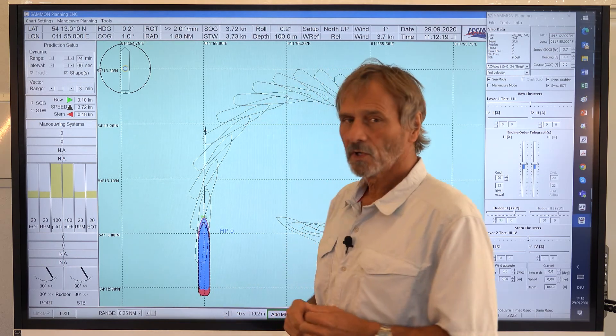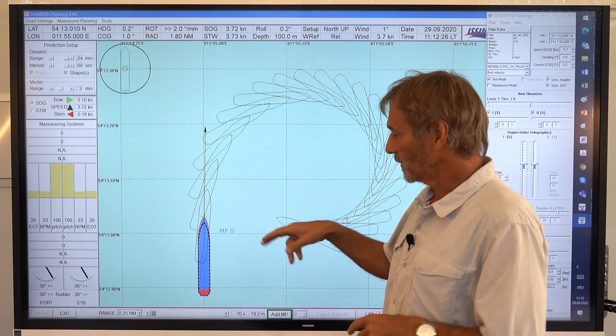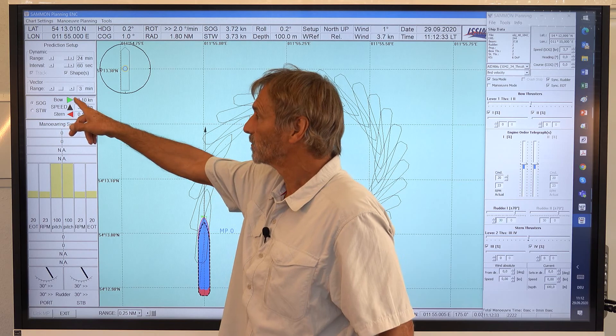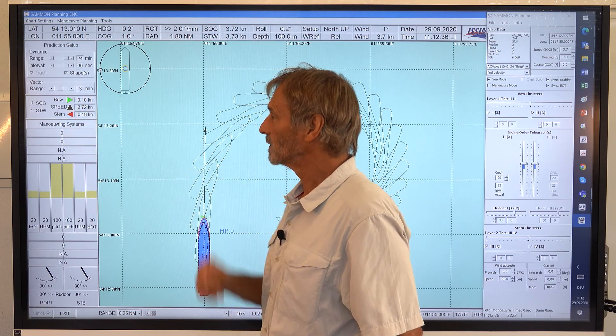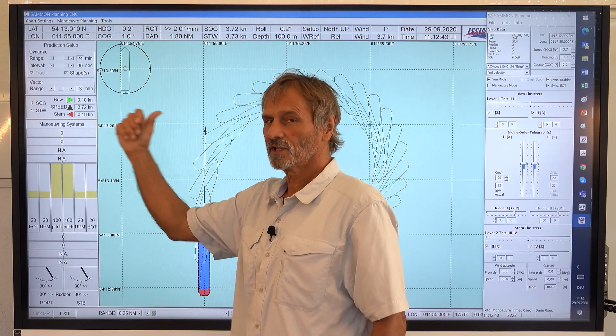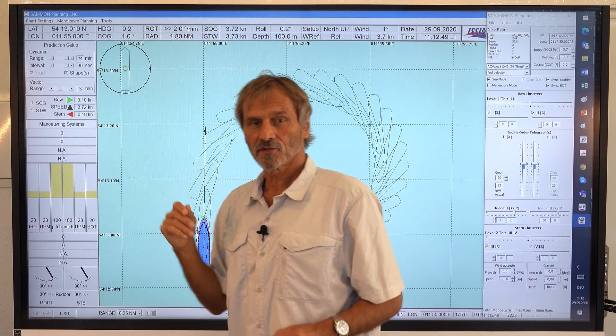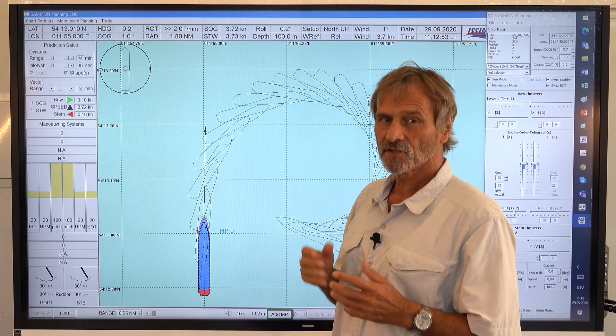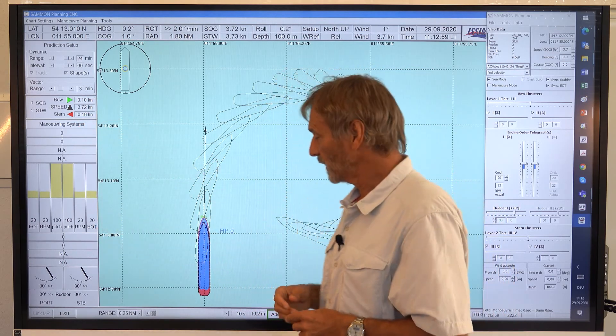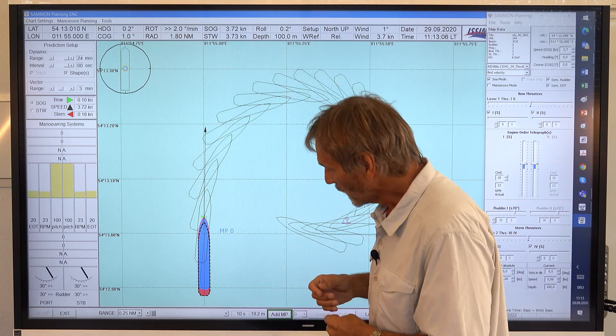What we want to discuss is the pivot point development. I put it back to the initial position. We learned that the pivot point location or position is depending on the speed components, the transfer speed components at the bow and at the stern which are indicated by these numbers here at the bow and at the stern. And for the time being we see after 10 seconds the bow is going with 0.10 knots to this side and the stern with nearly 0.2 knots to the other side.